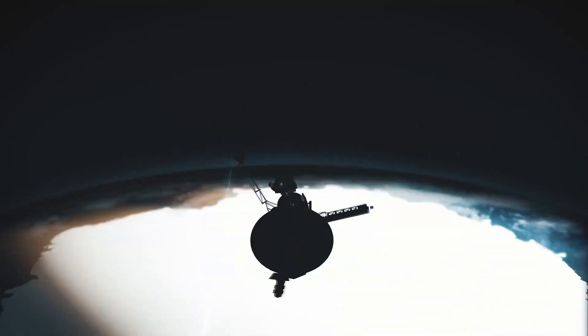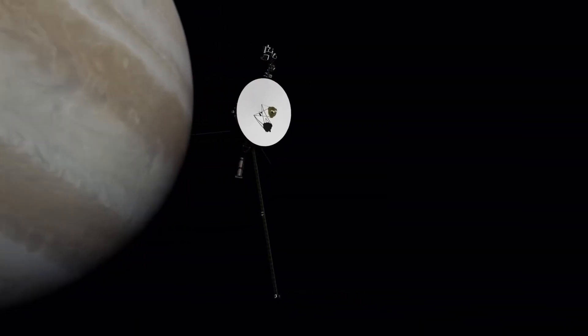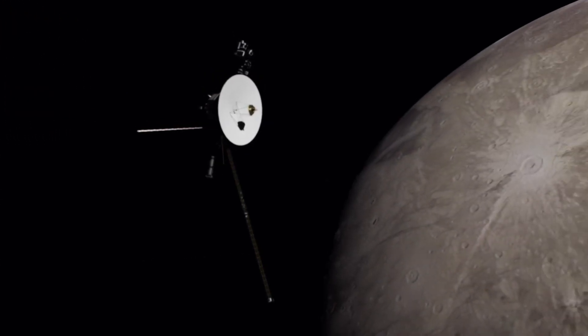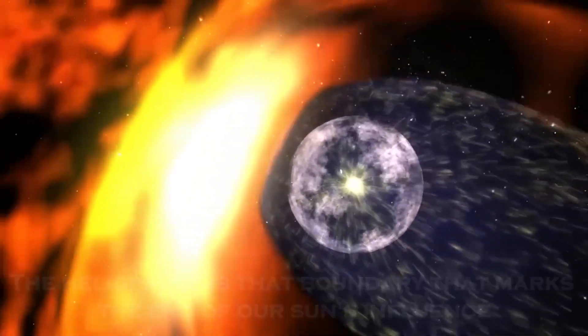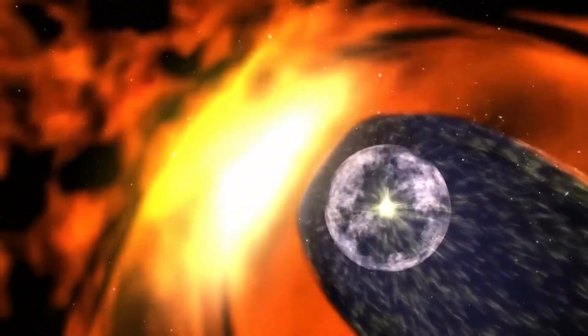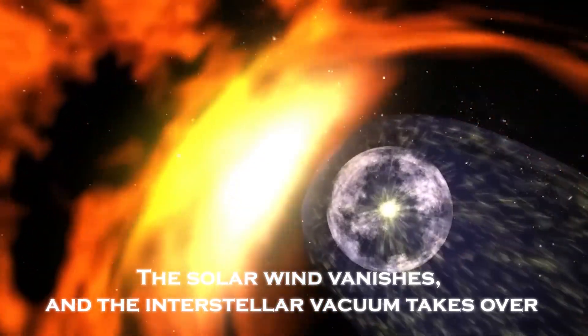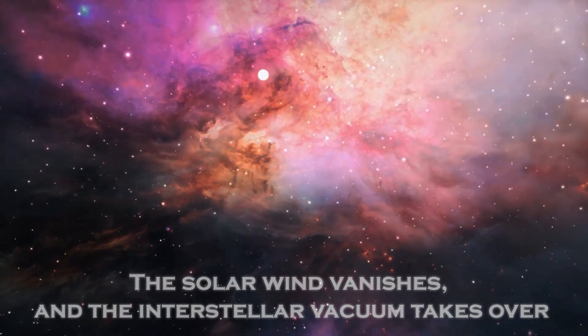It has detected something at the edge of our solar system, something scientists never imagined. The Heliopause is that boundary that marks the end of our sun's influence. Beyond this barrier, the solar wind vanishes and the interstellar vacuum takes over.